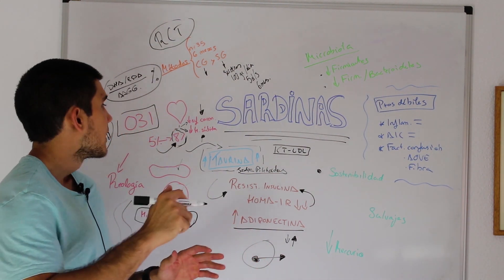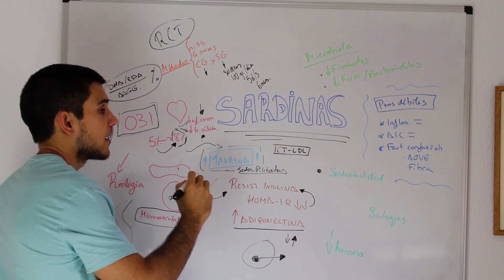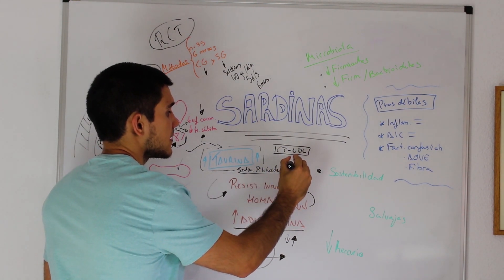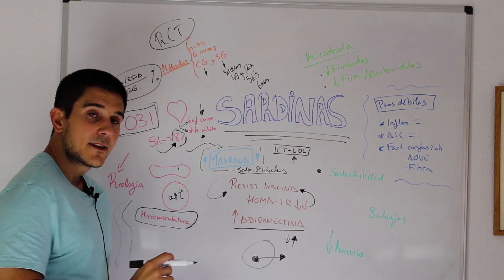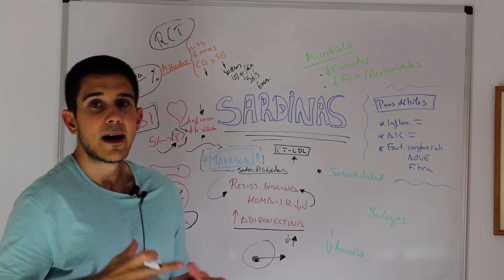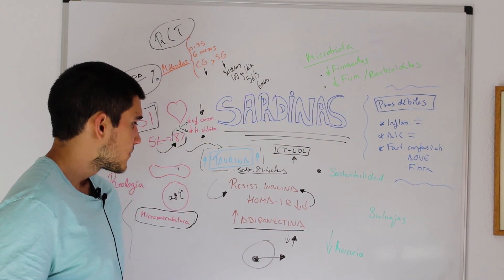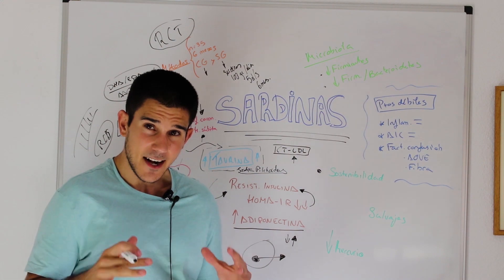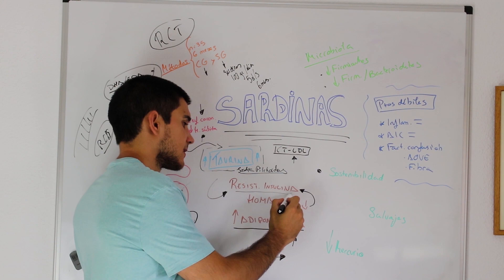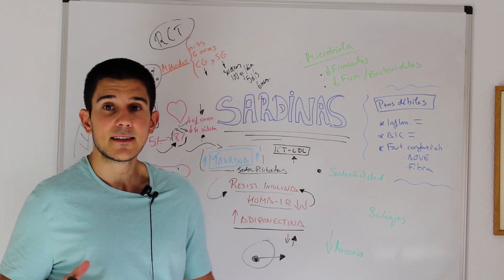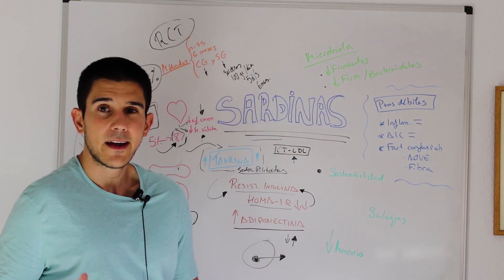So probably both omega-3 and taurine contributes in sardines to an improvement of cardiovascular health. So until now we have covered an improvement of omega-3 index that is a biomarker of cardiovascular disease, as well as LDL cholesterol, the most basic and known biomarker of cardiovascular disease.